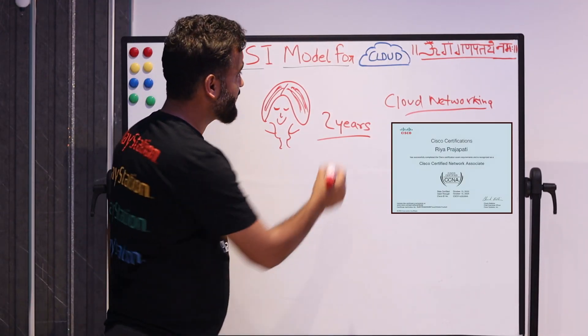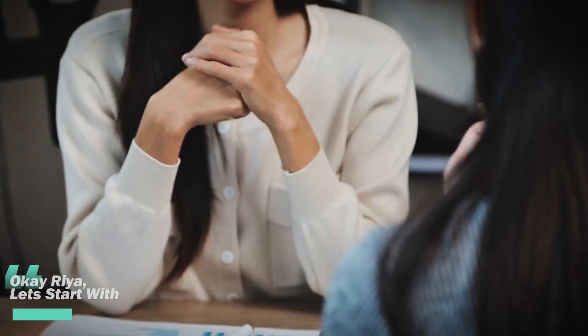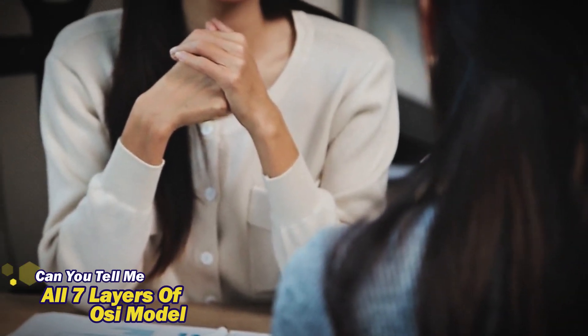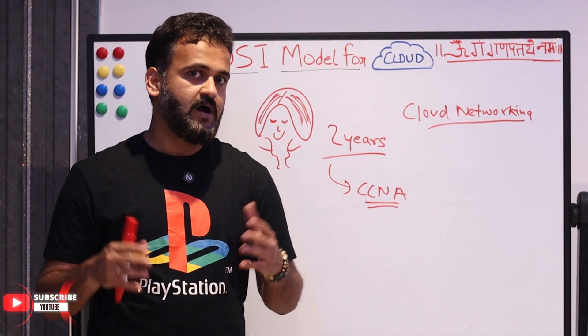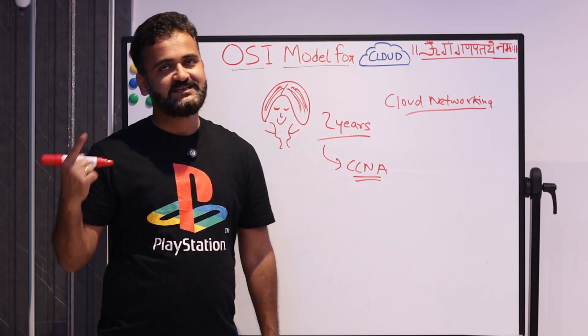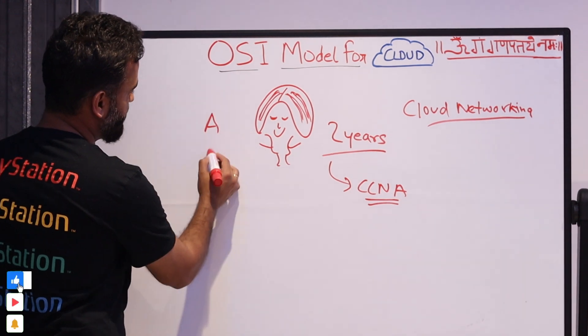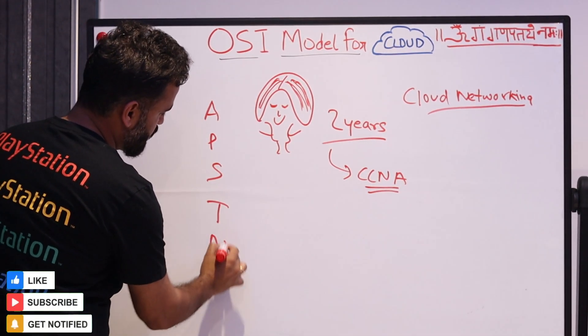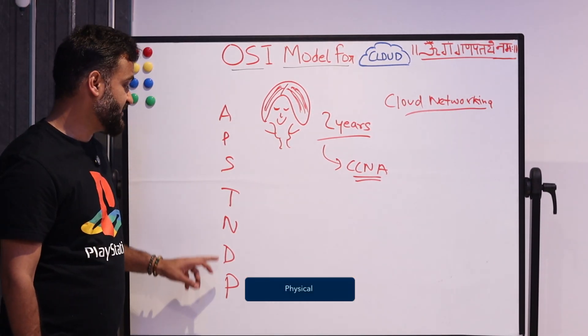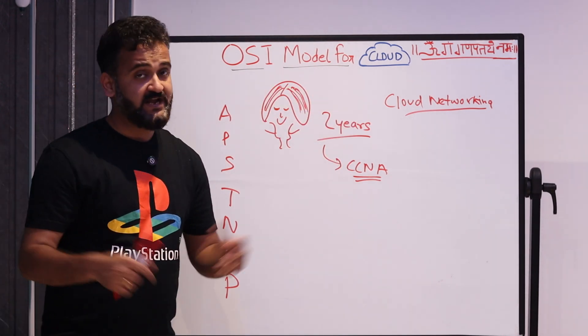The interviewer was very impressed because she had good experience in traditional networking and was already CCNA certified. The interview starts and the interviewer asks Rhea to name all seven layers of the OSI model. Rhea, being a subscriber, knew the acronym — 'All People Should Try New Domino's Pizza' — and quickly recalled the layers from bottom up: Physical, Data Link, Network, Transport, Session, Presentation, and Application. The interviewer was impressed.